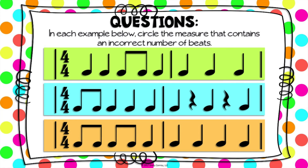However, if we look at that second measure, I count a quarter note — that's one — a rest, that's two — a quarter note, that's three — a rest, that's four — and then there's another quarter note. So that one has five beats in it. That's too many! So the second measure, again, is the measure that's wrong.